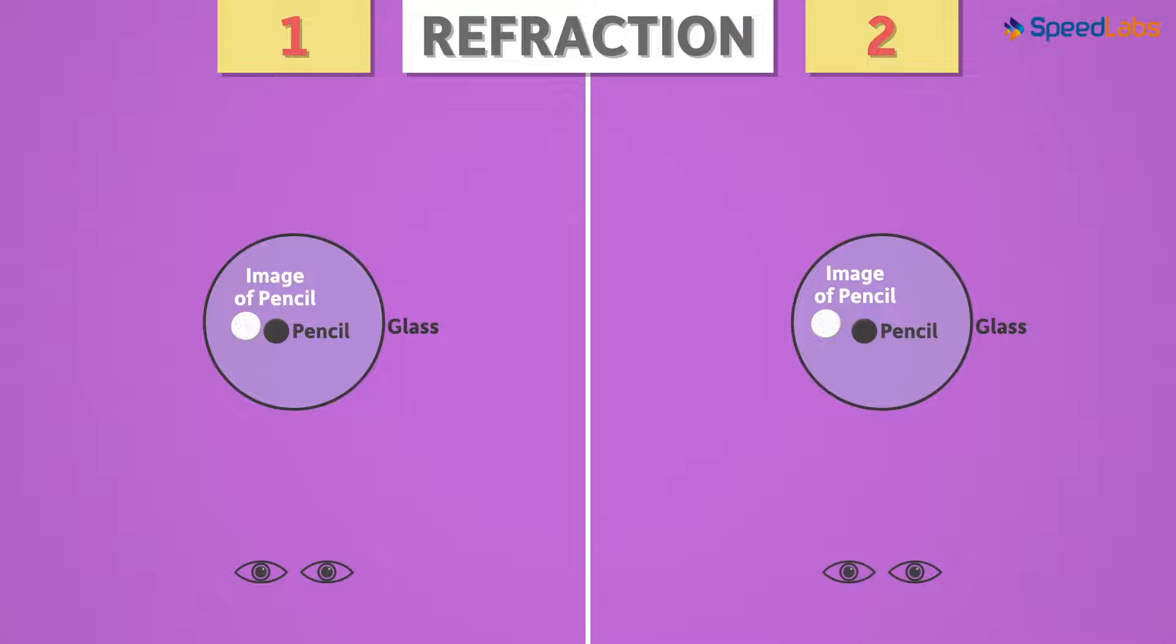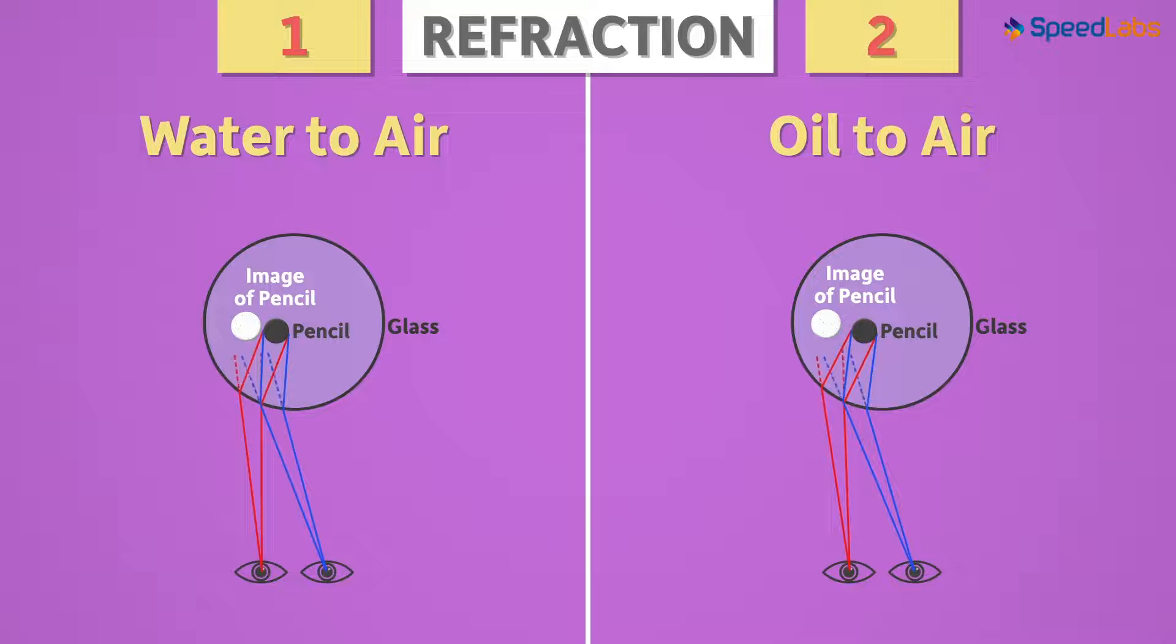There are two cases here. One, refraction of light when it travels from water to air. And second, refraction of light when it travels from oil to air. We draw a simple ray diagram to represent this situation.